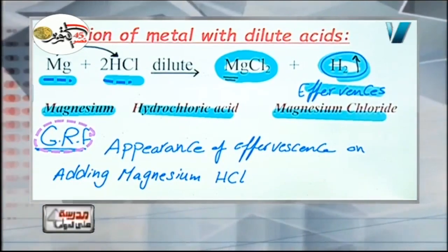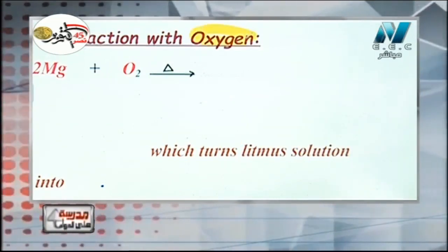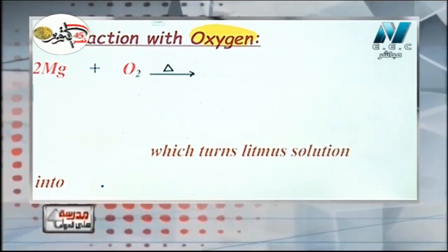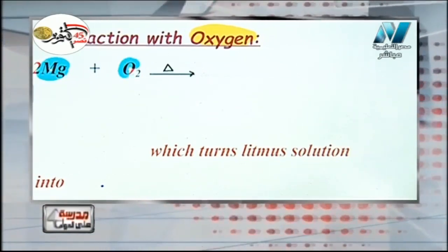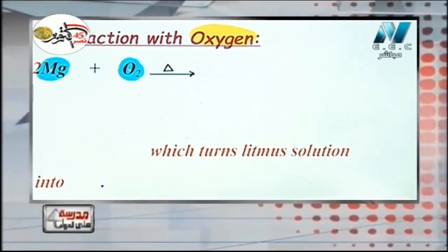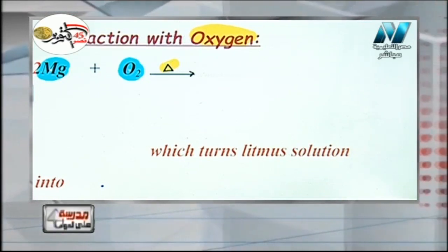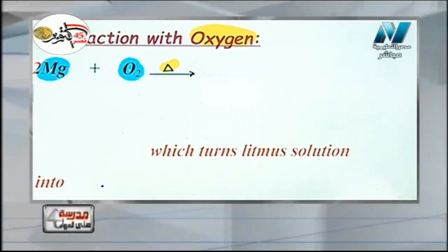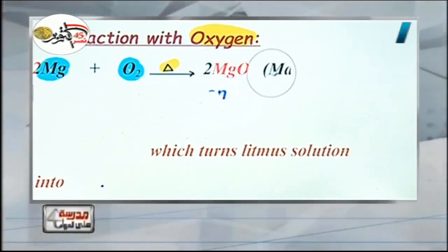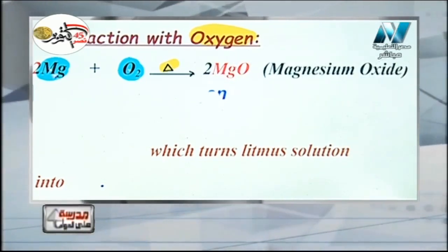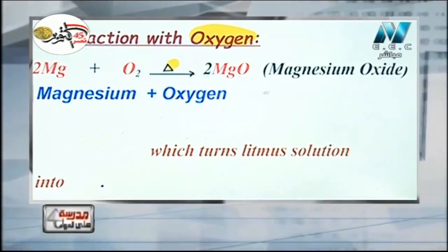Now for the reaction of metals with oxygen: magnesium with oxygen, by heating or burning, will combine with atmospheric oxygen producing magnesium oxide. So: magnesium + oxygen → magnesium oxide.